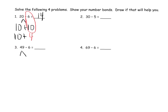Let's do 49 minus 6. So I'm going to do 40 plus 9, and then 9 minus 6 gives us 3, so now we have 40 plus 3 which is 43, and there's our answer.